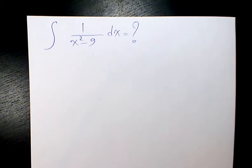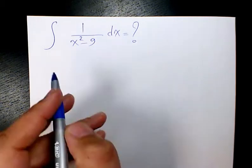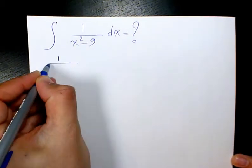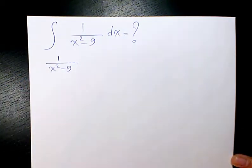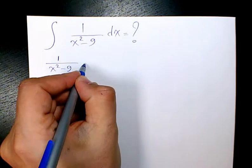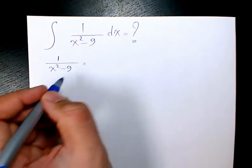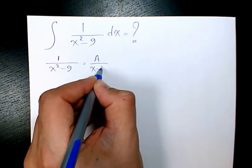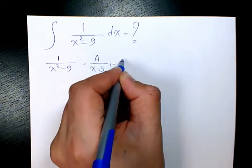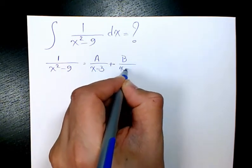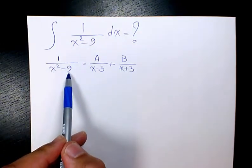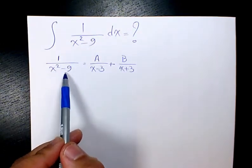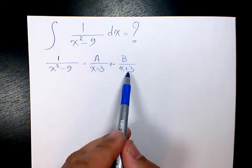So first of all, I take here 1 over x squared minus 9. That will be A over x minus 3 plus B over x plus 3, because here we have x squared minus 9 which is 3 squared. That's difference of squares, we have x minus 3 and x plus 3.